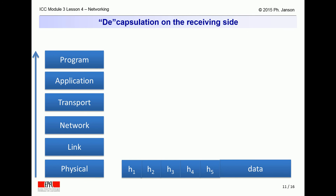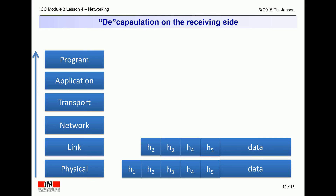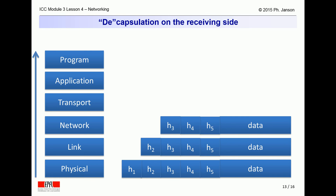Thus, when a message arrives through a physical wire or medium with its five attached headers, the physical protocol layer on the receiving side processes and removes its own physical layer header, H1, and passes the remainder of the message to the link layer. The link layer similarly processes and removes its own link layer header, H2, and passes the remainder of the message to the network layer.